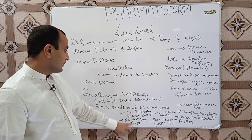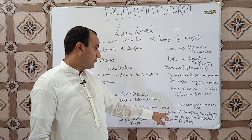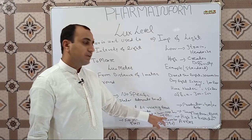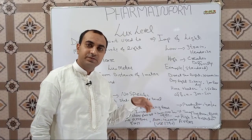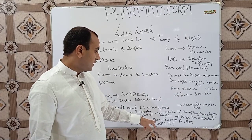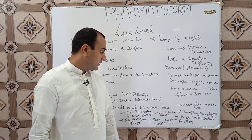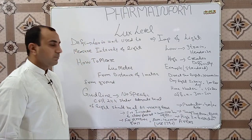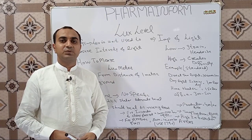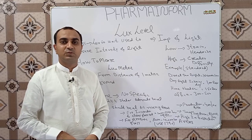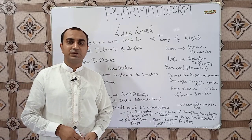For inspection of clear glass containers, the lux level should be 2000 to 3750 lux — the reference is USP 790. For inspection of amber glass, the light intensity should be higher, between 8000 to 10,000 lux — the reference is USP 1790. That is a brief overview of lux level. If you have any confusion you can ask in the comments. If you like the video, please subscribe to the channel and share with others.